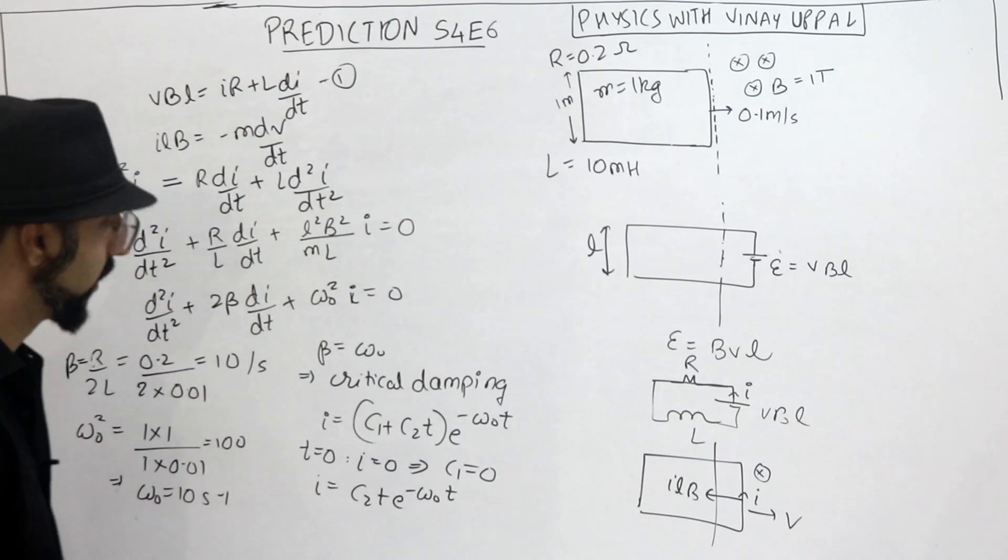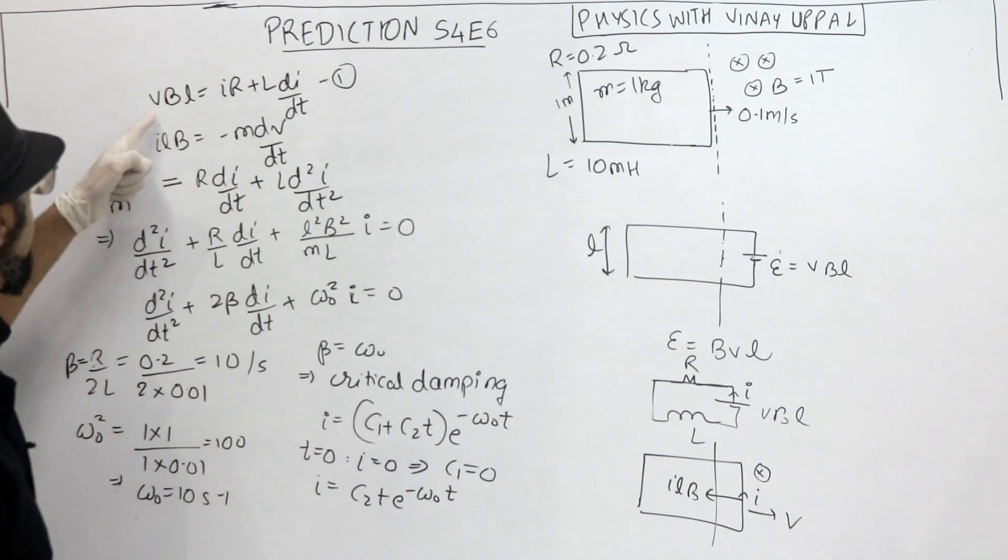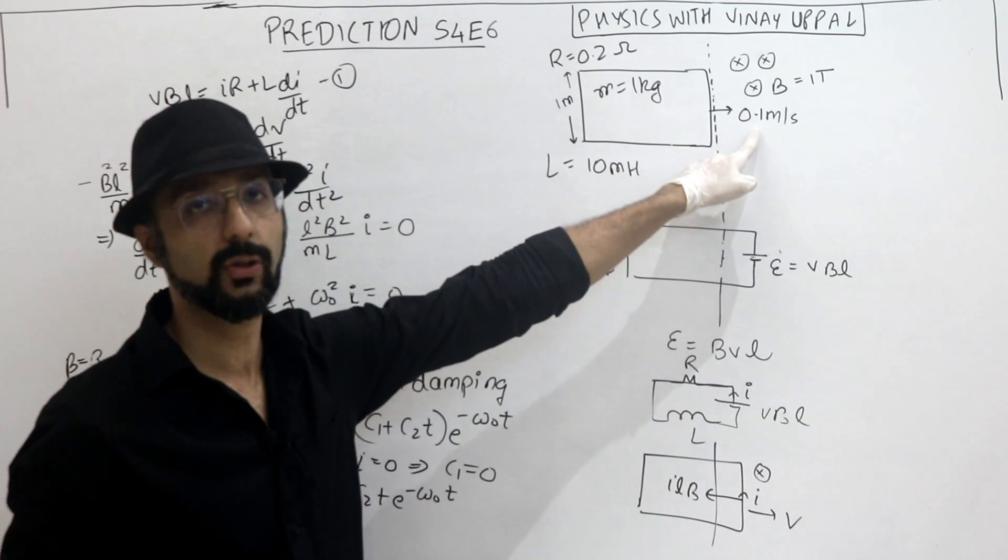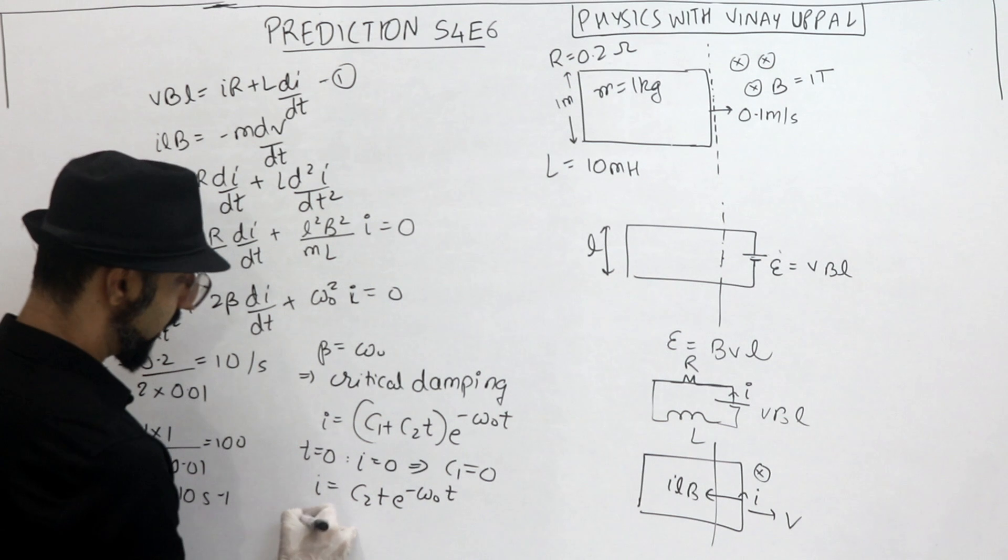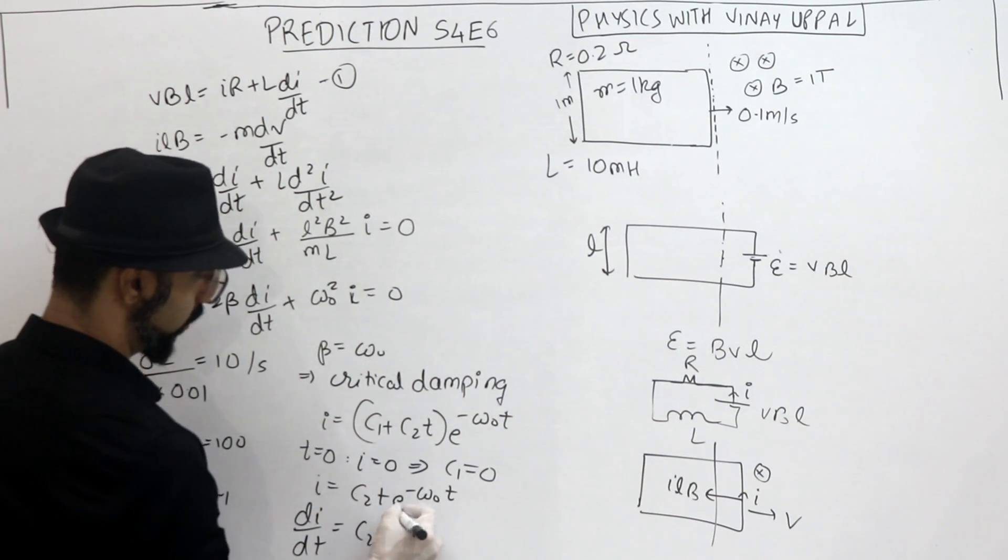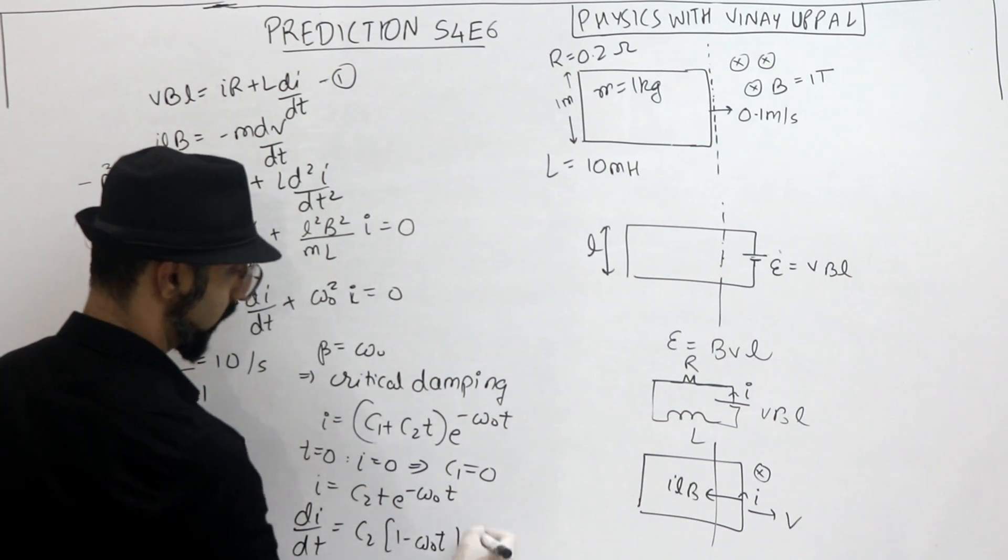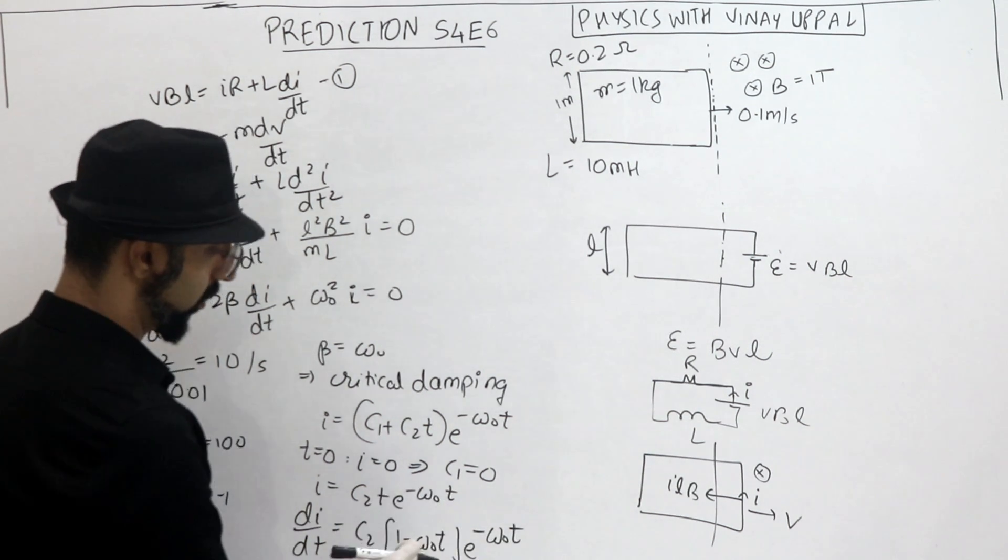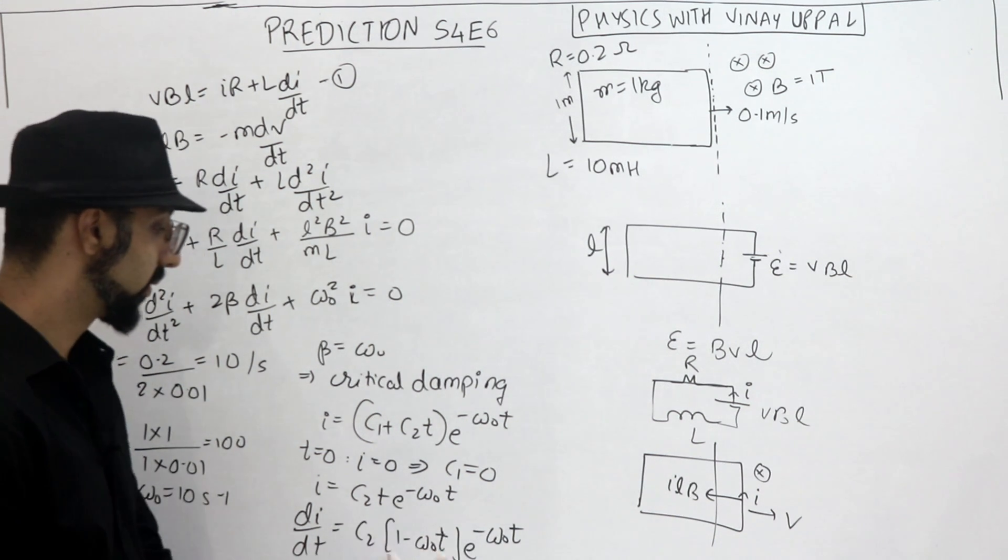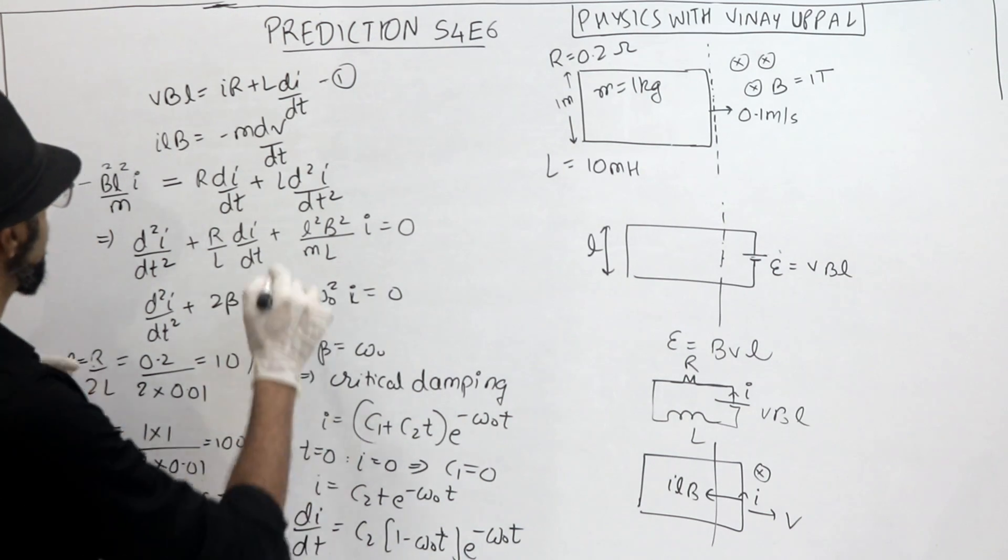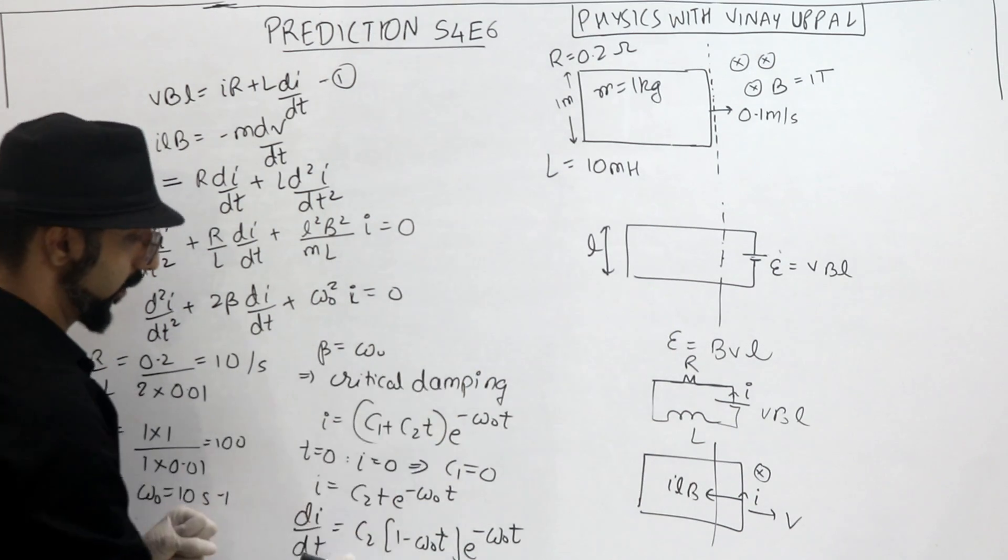Now C2 ka value kya se nikala jai? C2 ka value is very simple. If I can find the derivative and put it, let's say in this equation, because we have to use the additional information given about the initial velocity. Initial velocity kittane, 0.1 meter per second. Hai na? To di/dt kitt anna ajaega? C2 ya ajaega, product rule use karke, right? e raised to minus omega naught t, minus omega naught t. Alright? This can be done. So t equal to 0, di/dt. Let's substitute it in equation number 1. So let me just erase this part of the board and then we will continue.